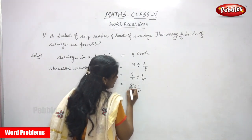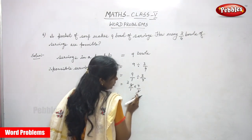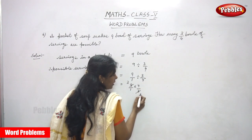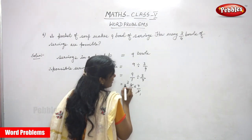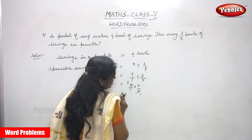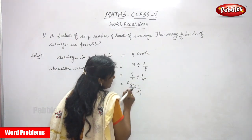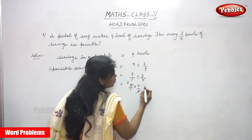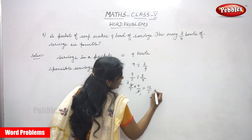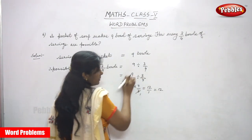So you must cancel it. Cross three means three divided by three gives one, and nine divided by three gives three. So three into four gives twelve, and one into one gives one. So you can get twelve. The answer is twelve bowls.